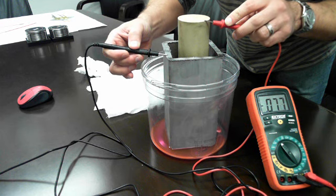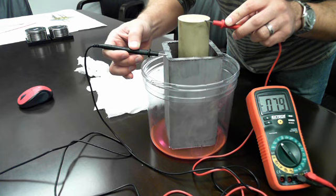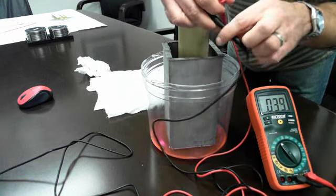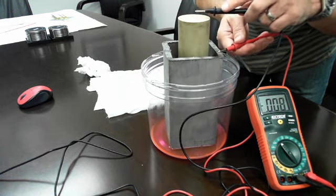So there is voltage that is pushing between the iron and the bronze. If I reverse polarity, let's see if the current reverses, and it does.